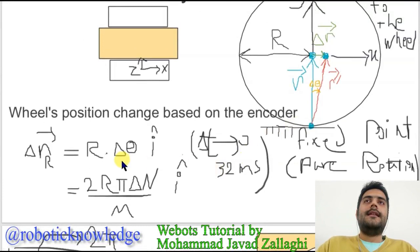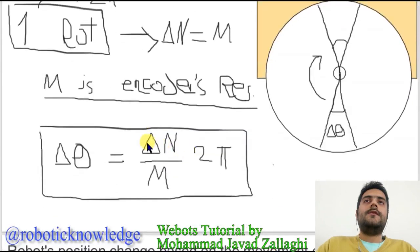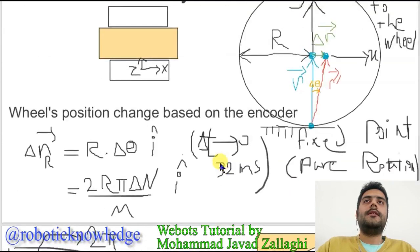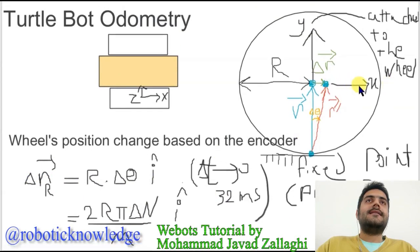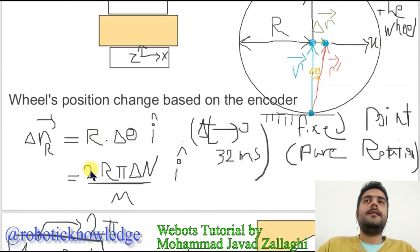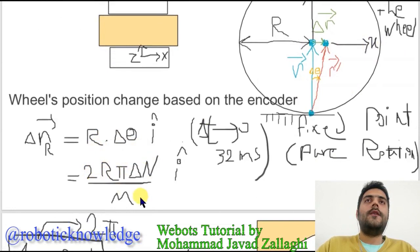You can see that instead of delta theta, I'm using delta N over M times 2π. And you can see that the change of position of the right wheel at its local coordinate is in the x direction, and its magnitude is 2πR times delta N over M.